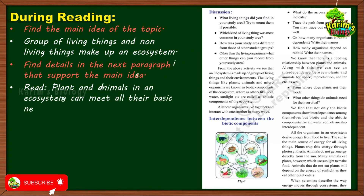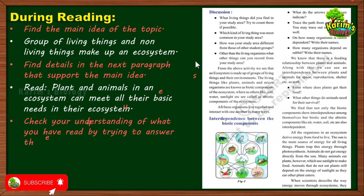For example, one supporting detail is that plants and animals in an ecosystem can meet all their basic needs within their ecosystem. Basic needs include food, water, and shelter. Plants and animals do not need to go anywhere else — within the ecosystem itself, they can find everything they need.